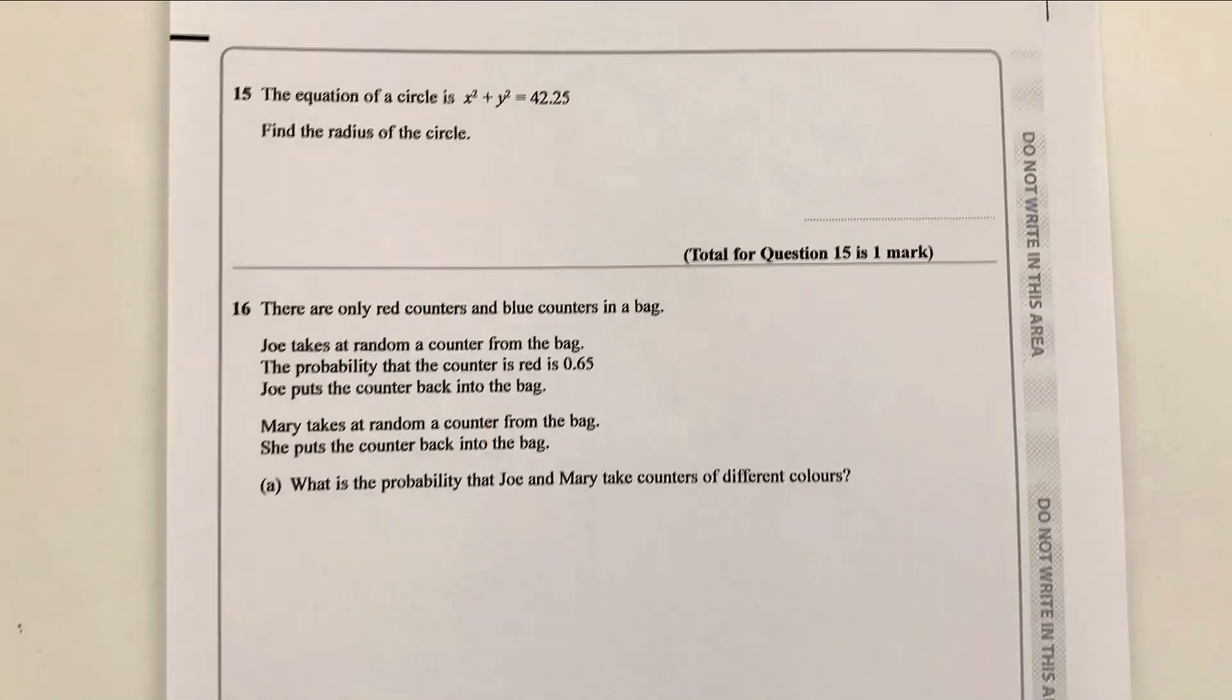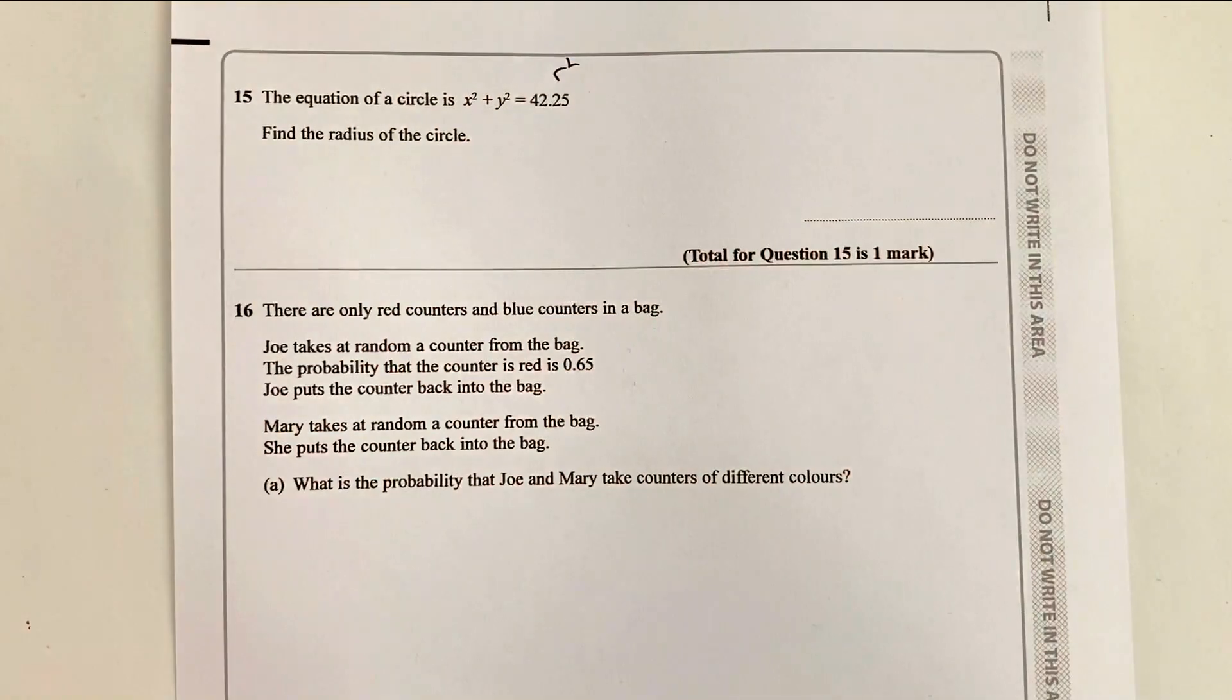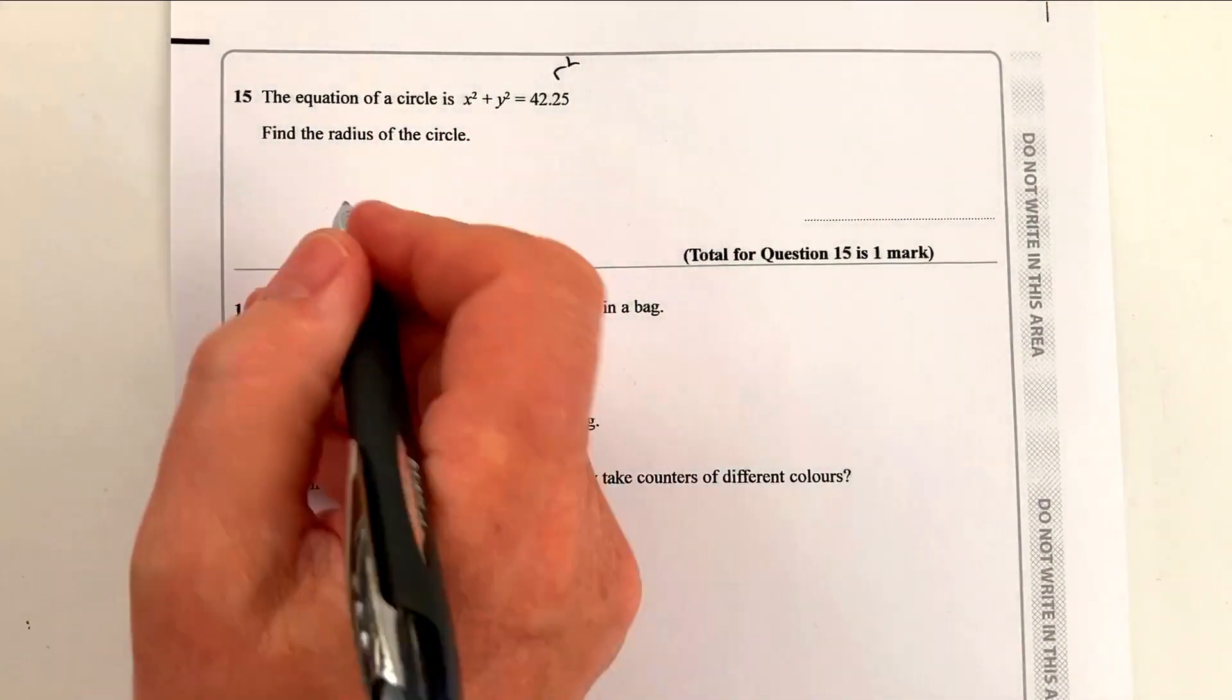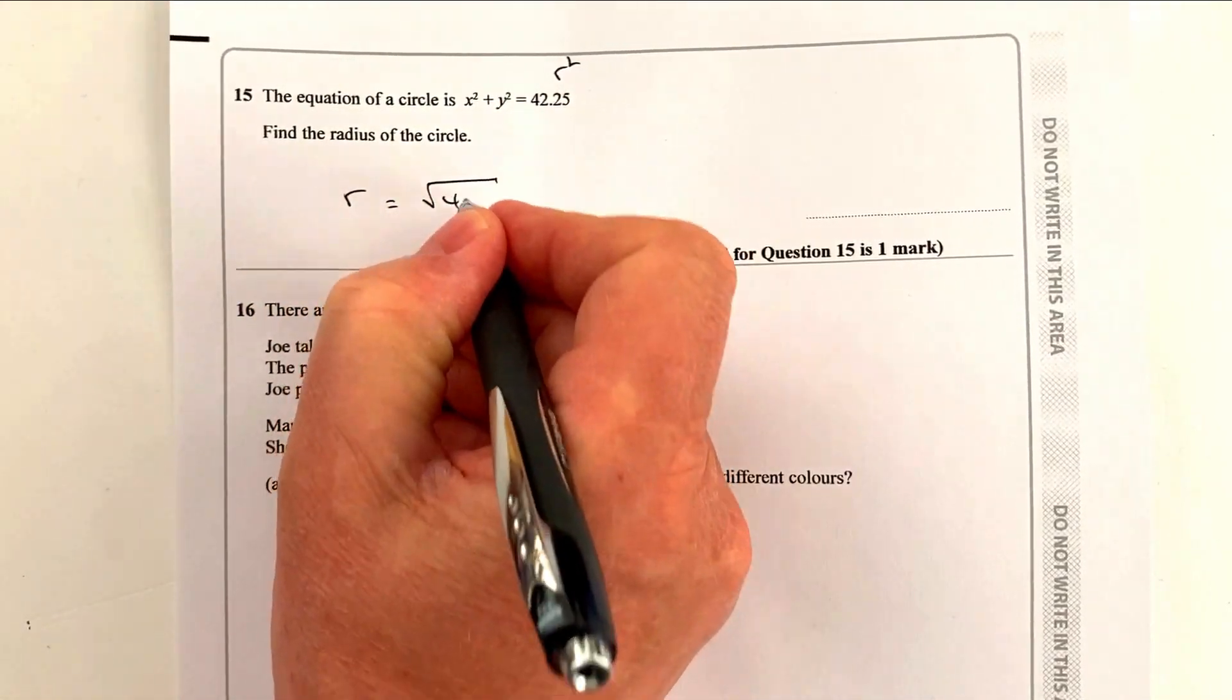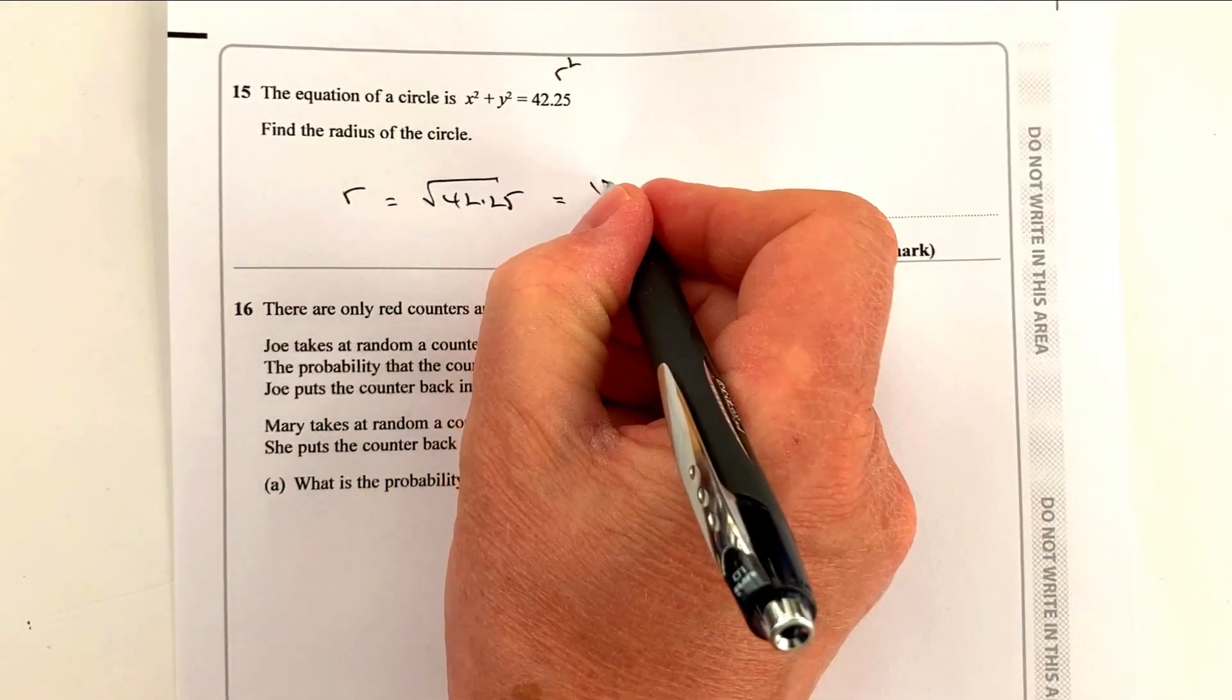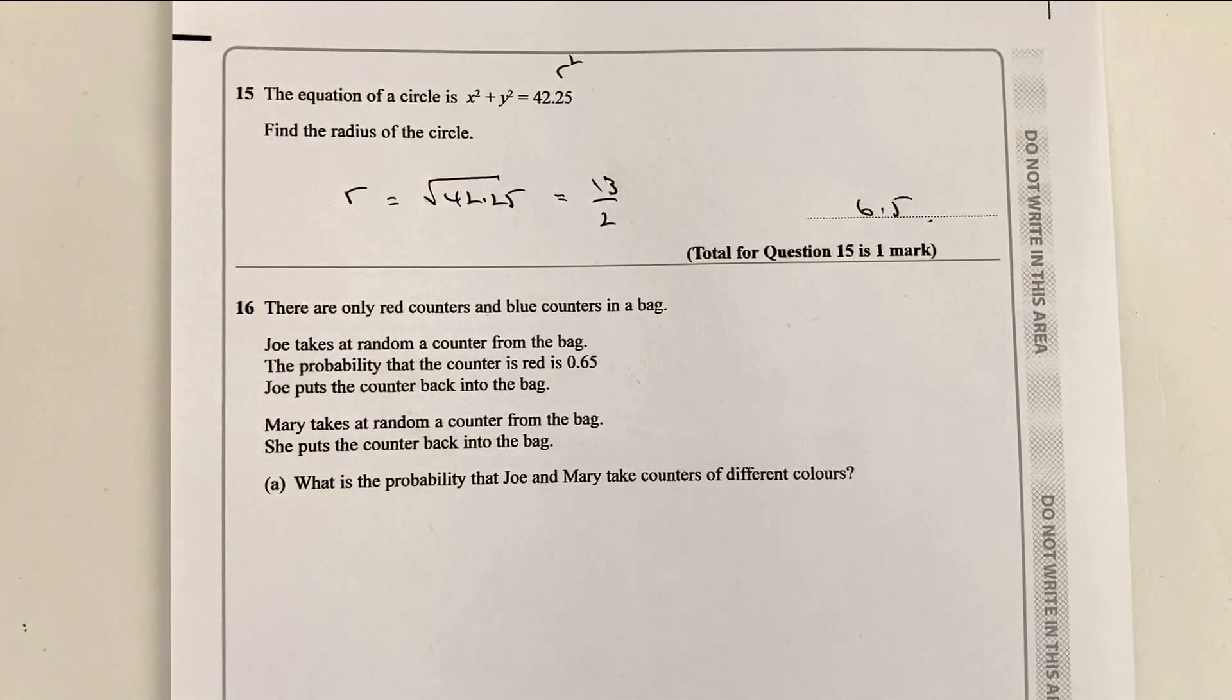Let's move on then to question number 15. Question number 15 is going to be one that deals with radius of a circle, if you know the formula. The formula is x squared plus y squared equals r squared. So this 42.25 is the value of r squared. So therefore, the radius must be the square root of 42.25, and that's going to give me exactly 13 over two, which is 6.5. So a very quick throwaway question. But you do need to know the formula for the equation of a circle.